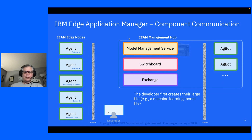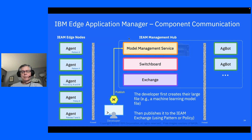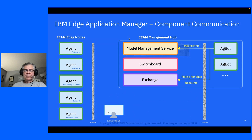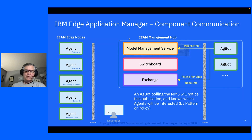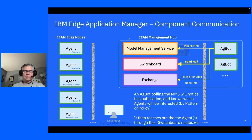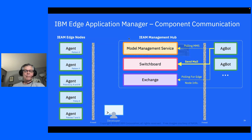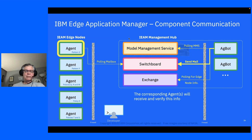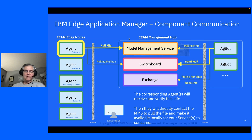The developer creates their large file, like a machine learning model file, and publishes it to the IEAM exchange using a pattern or policy. The AgBot that's been polling the MMS and looking for edge node registrations will notice whether the policy or pattern of a particular agent makes it interested in this MMS publication. If so, it will reach out to the agent through their switchboard mailboxes, and then the corresponding agent will receive and verify the information, then directly contact the MMS to pull the file and make it available locally for your services to consume.